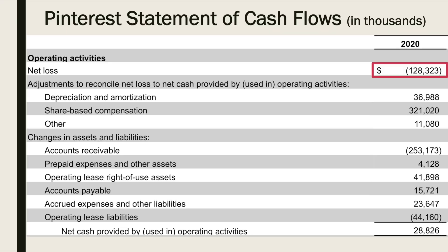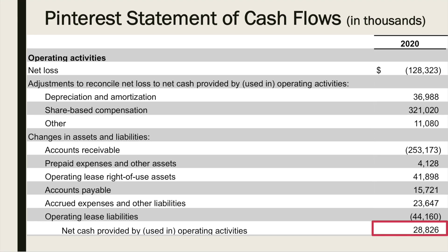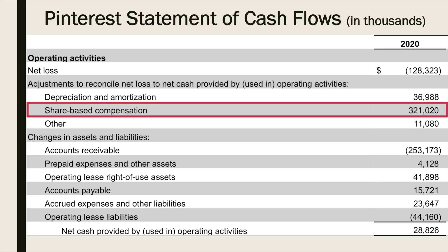Pinterest, for example, posted a net loss of $128 million in 2020, yet had $28 million of positive operating cash flow during that same period. The main reason for the discrepancy? Pinterest relied heavily on share-based compensation to pay its employees. This reduced Pinterest's net income in 2020 but had no effect on its cash flow. Thus, share-based compensation was added back to Pinterest's net income when calculating its operating cash flow.